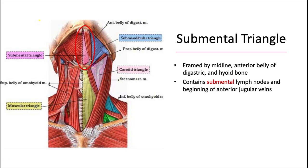Right next door we have the submental triangle. This one's framed by the midline, the anterior belly of the digastric, and the hyoid bone. This one contains lymph nodes also sharing the same name, the submental lymph nodes, and the beginning of the anterior jugular veins.